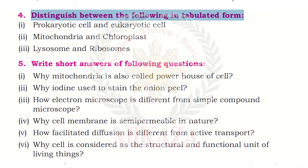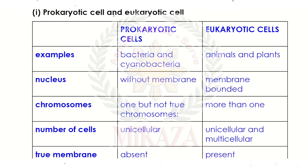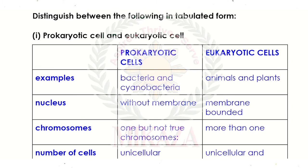First, we have prokaryotic cells versus eukaryotic cells. Examples of prokaryotic cells are bacteria and cyanobacteria. Examples of eukaryotic cells are animals and plants. In prokaryotic cells, the nucleus has no membrane covering it, whereas in eukaryotic cells the nucleus has a membrane.